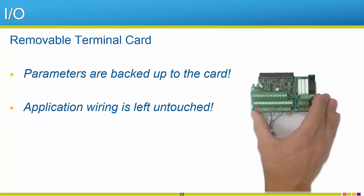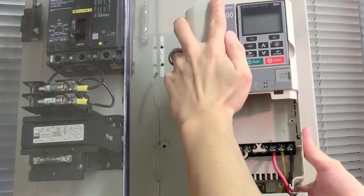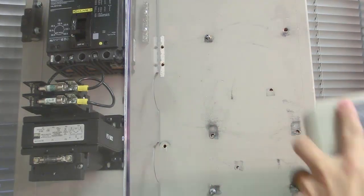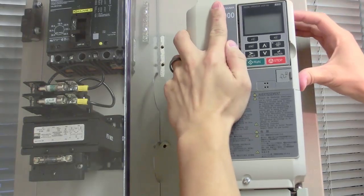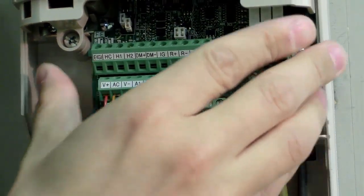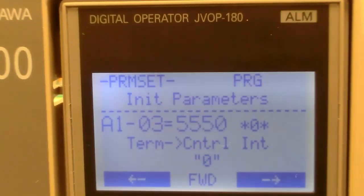For example, if an R1000 unit must be replaced, simply remove the terminal card, dismount the old R1000, and mount the new R1000. All of the application's wiring and programming are on the original terminal card. Simply plug in the terminal card into the unit, load the backup, and you're on your way.